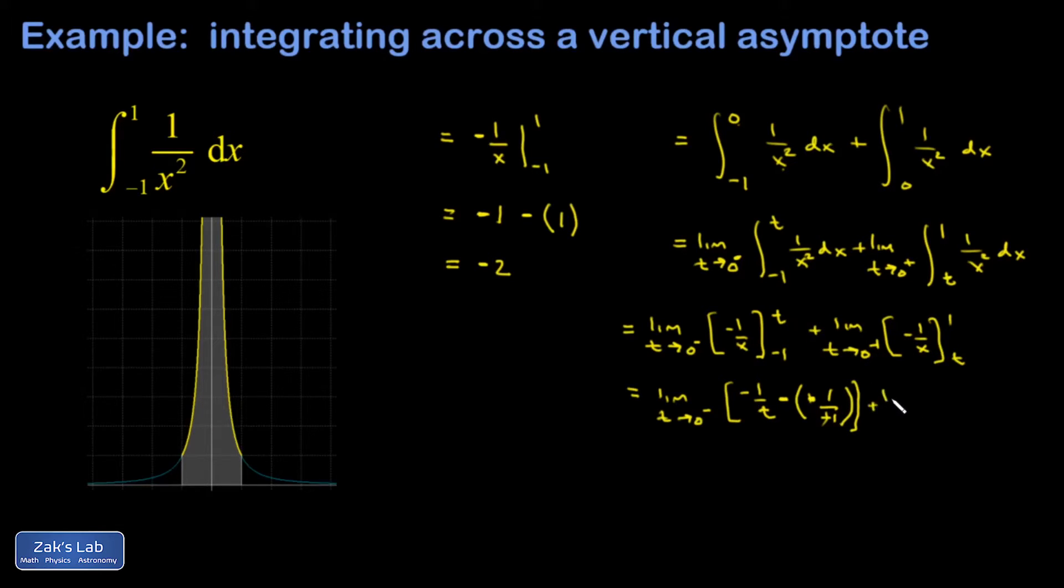Then I have the limit as t goes to 0 from the right. I plug in my limits of integration. The upper limit gives me negative 1, and I subtract what I get when I put in the lower limit.